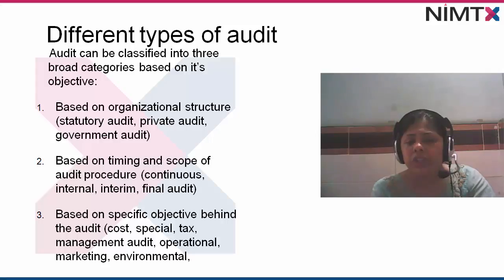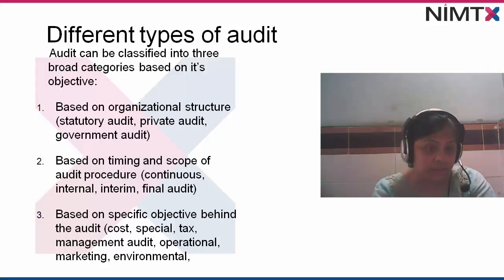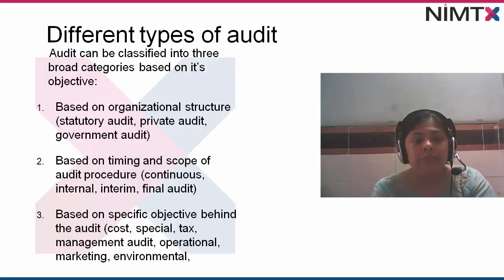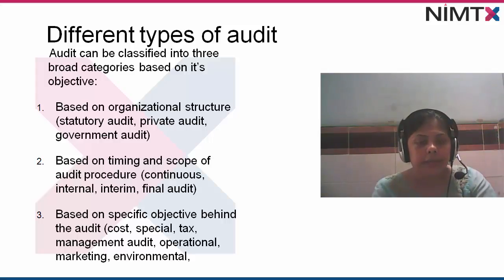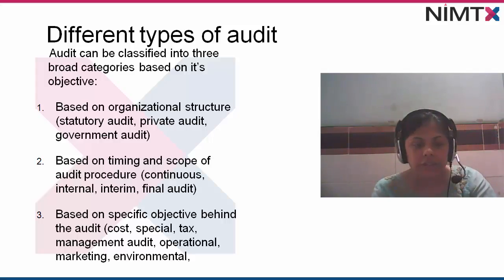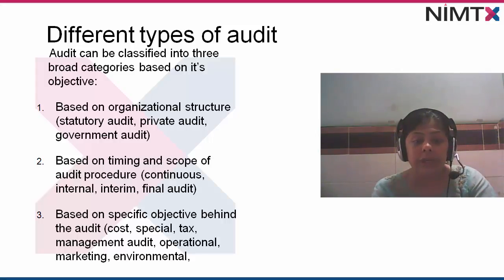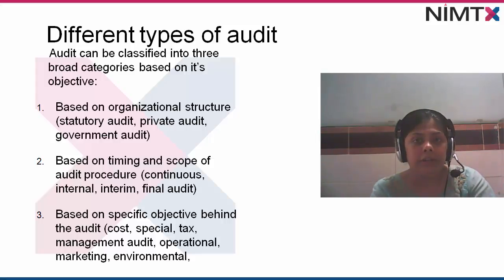Based on timing and scope of audit procedure: Continuous audit — something which happens on a regular basis, like internal audit. Interim audit — a draft kind of audit prepared before the final audit, which can be reviewed to see what internal audit the organization has done. Final audit — conducted towards the end of the financial year. Balance sheet audit — to verify the items in the balance sheet, for example if assets worth 3 lakh crore are stated, the auditor verifies this.